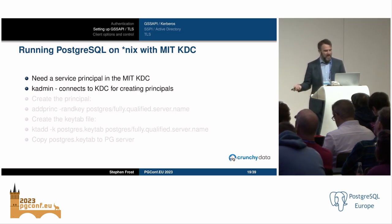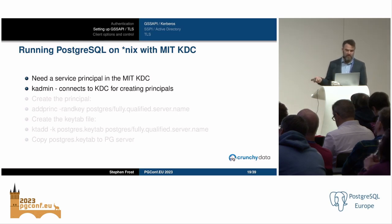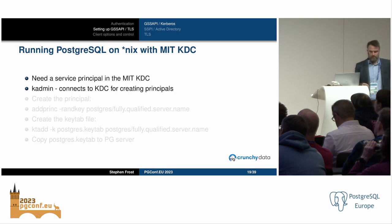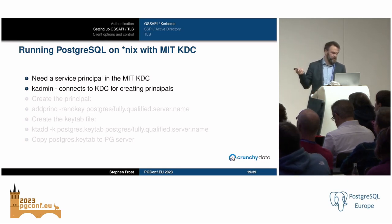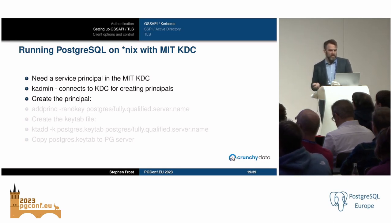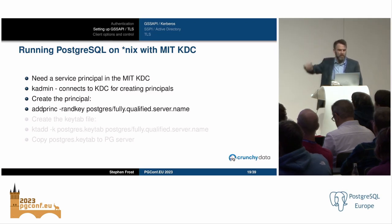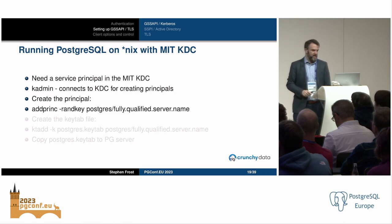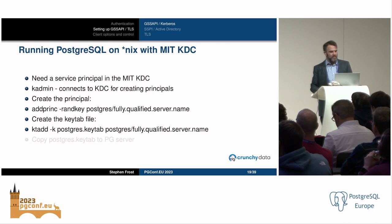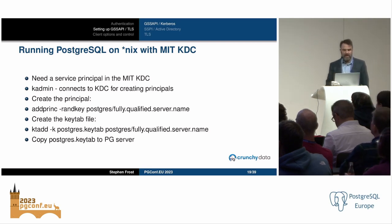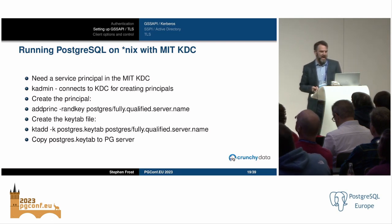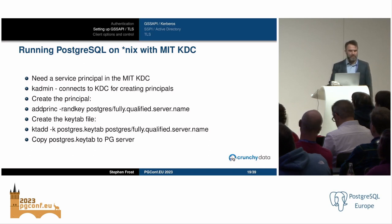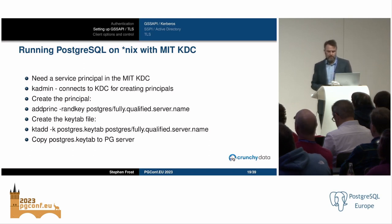When using an MIT KDC, it's similar but slightly different — you need a service principal in the MIT KDC but don't need a separate user principal. KAdmin is the tool for creating principals: run addprinc with randkey so it doesn't prompt for a key. Create the keytab file using ktadd command inside KAdmin. Then copy that keytab file over to the Postgres server. You need to configure your /etc/krb5.conf, though in Active Directory environments, realm information and KDC lookups are often managed automatically via DNS.